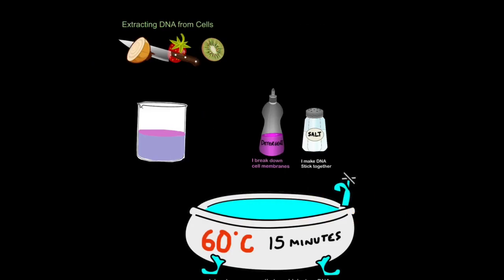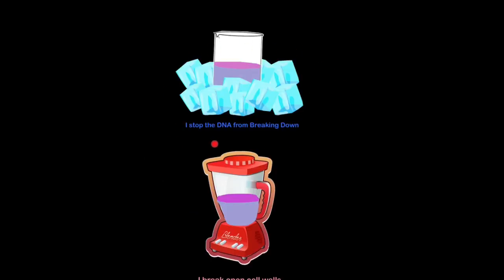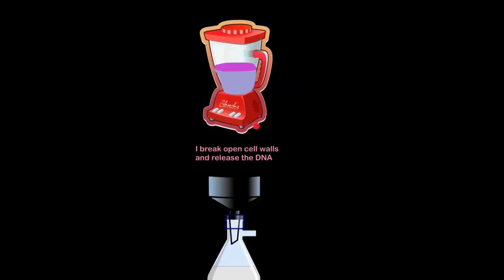First, chop up some onion. Then add detergent to break down the cell membranes and salt to make the DNA stick together. Put the mixture in a 60 degree water bath for 15 minutes to denature enzymes that would destroy DNA. Chill the mixture on ice to stop DNA from breaking down. Blend the mixture to break open cell walls and release DNA.